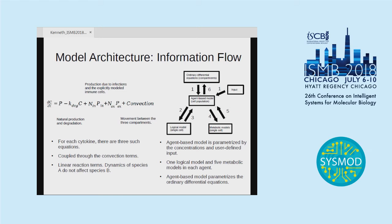Moving on to the mathematics — the cytokine dynamics and concentrations are modeled by a set of ODEs. The master equation is shown here. For each cytokine there are three such equations because there are three compartments, and they're coupled through the transport terms. The production and consumption terms are linear, meaning the dynamics of species A do not affect species B. On the right, a schematic summarizes the information flow in the system. Central to it is the agent-based model, parameterized by the concentrations from the ODEs and the user-defined signal. It passes information to each agent, inside which there's a logical model and five metabolic models. Once solved, the outputs are passed back to the agent-based model, which then parameterizes the ODEs.